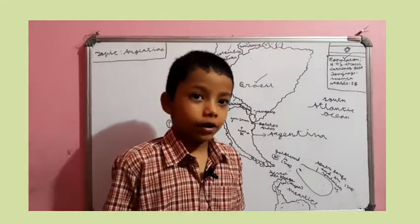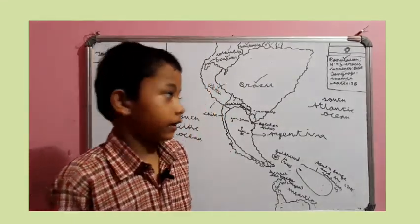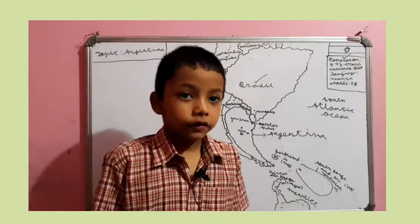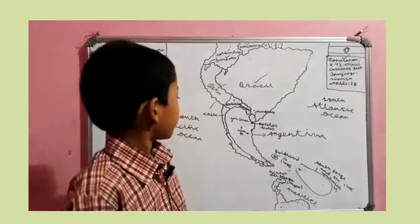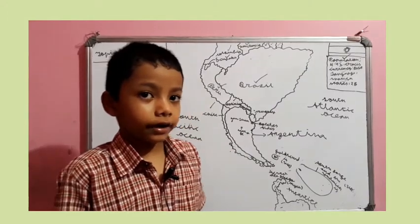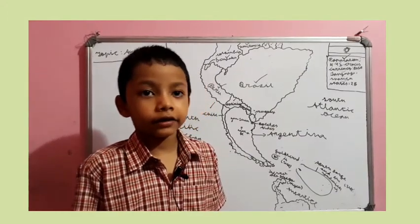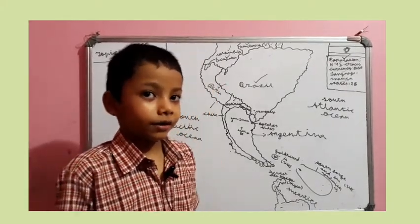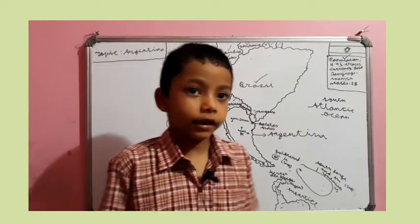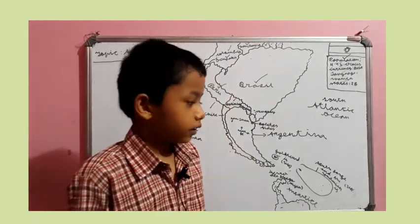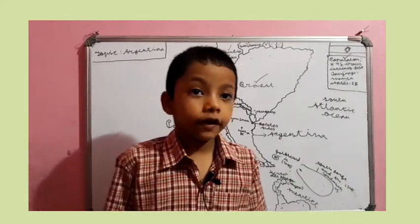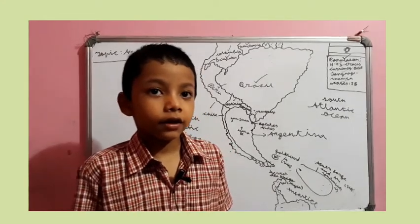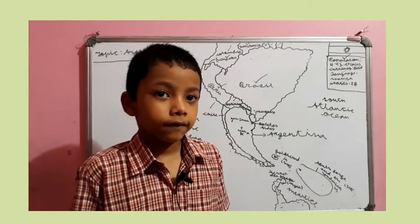Now the fifth one. Does Argentina border the South Pacific Ocean or the South Atlantic Ocean? South Atlantic Ocean. Argentina borders the South Atlantic Ocean more than the South Pacific Ocean. Number six: Argentina is near to the Falkland Islands, Chile, Bolivia, or Brazil? The answer is the Falkland Islands.